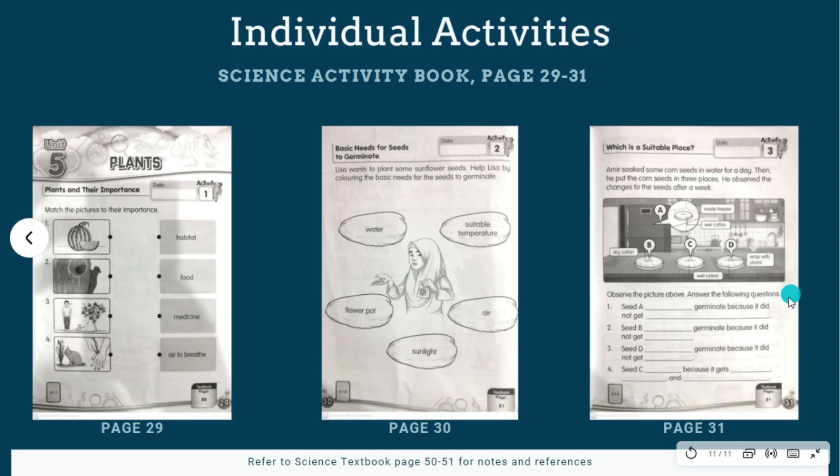The first one, seed A. Amer put it in the freezer. So seed A, what is going to happen to seed A after a week? After a week, observe the picture above. Based on this picture, let's observe this together. Answer the following question: Seed A, number one, seed A. Do you think it will germinate since Amer put it in the fridge, the freezer? Does a seed need freezing cold temperature to germinate? Do you think so? No, it does not need the freezing temperature. So seed A, the answer is number one: seed A not germinate because it did not get suitable temperature.